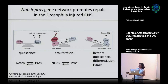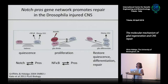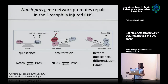Prospero promotes glial differentiation markers and activates the expression of NF-kB, which is normally inactive in the cytoplasm. After Prospero activates its expression, NF-kB is in the cytoplasm and nothing happens. When you have an injury, two things happen: it activates the expression of Notch, but more importantly it activates the translocation of NF-kB to the nucleus via the TNF pathway.